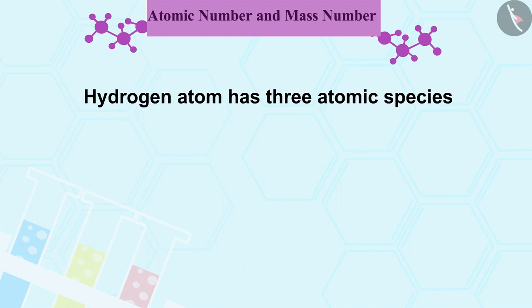For example, take the case of hydrogen atom. It has 3 atomic species: Proteum, Deuterium, Tritium. They all have the same atomic number but the mass numbers are 1, 2 and 3 respectively.